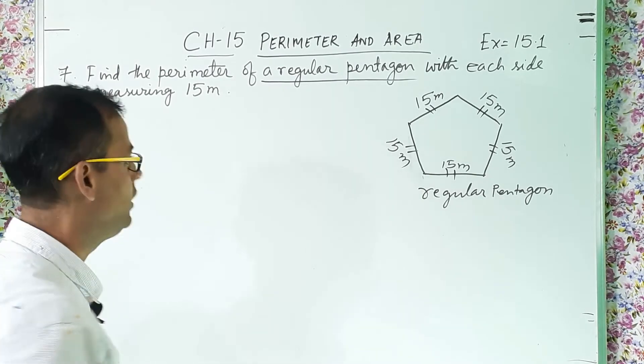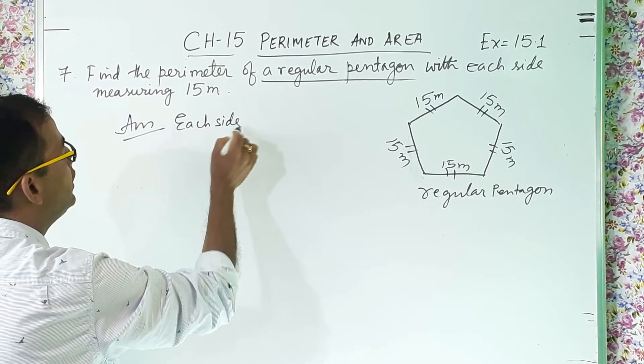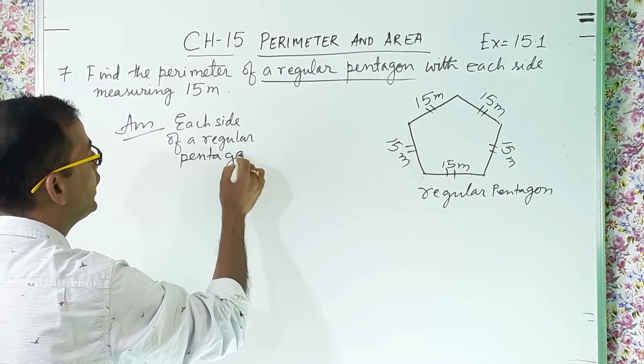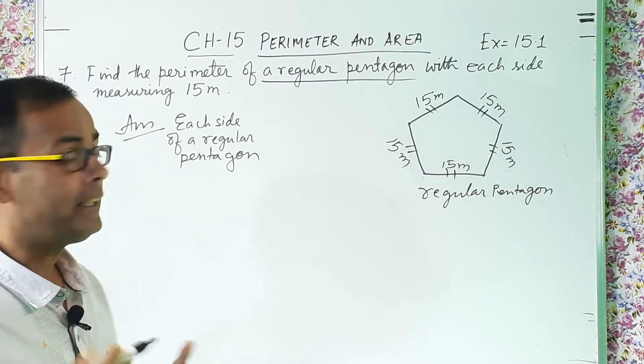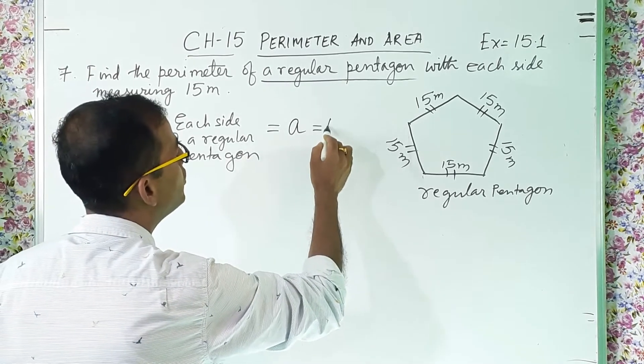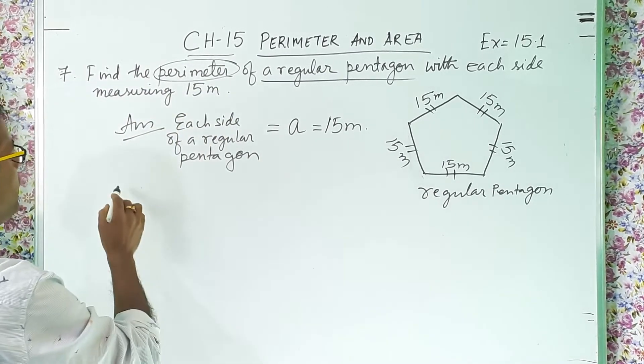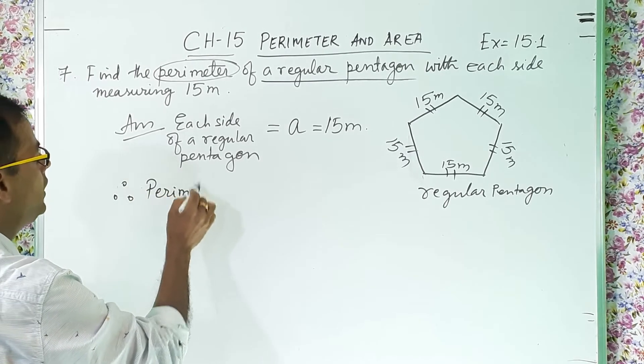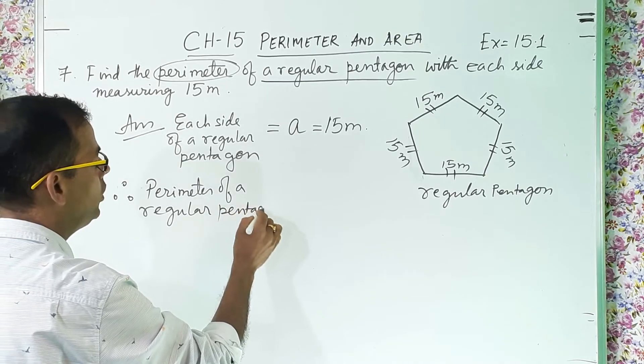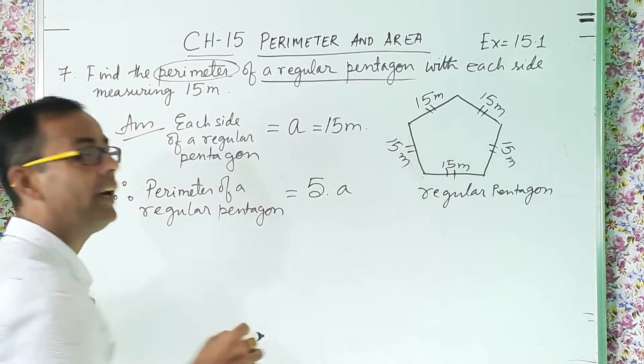So all the sides, each side is 15 meter. If I start the answer, each side of a regular pentagon, I can write equal to 15 meter or I can write like this way also equal to small a and that is equal to 15 meter. And then what we are asking? Find the perimeter. So perimeter will be what? Therefore perimeter of a regular pentagon equal to, so how many sides are there? 5 sides. So 5a or 5 into a unit.